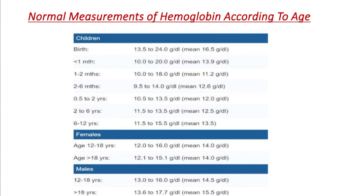For males aged 12 to 18 years — the adolescent male — the normal hemoglobin level is 13 to 16 gram per dL, with an average of 14.5 gram per dL.